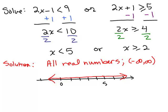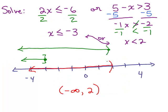Those two problems were special cases where one time we got all the real numbers and one time one of the solutions was absorbed in the other one. So these are the special cases with the or or the union that might come up.